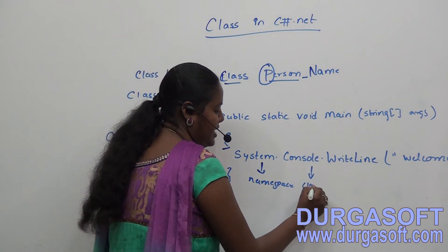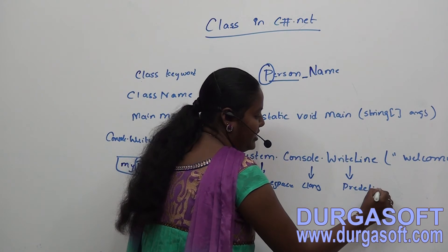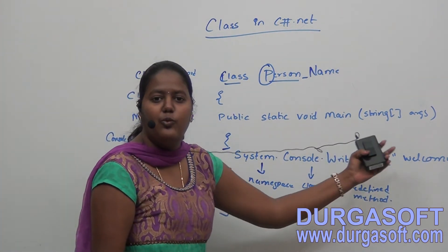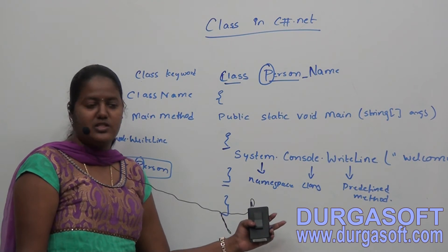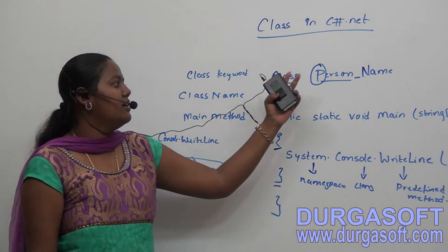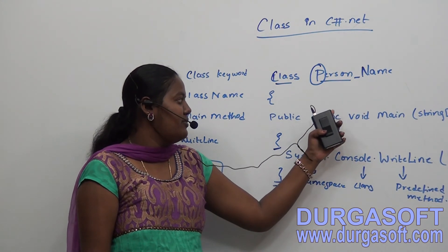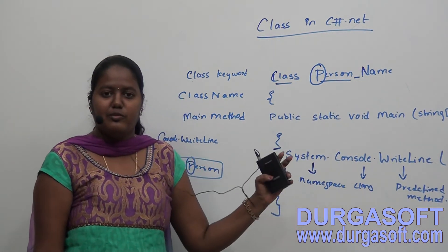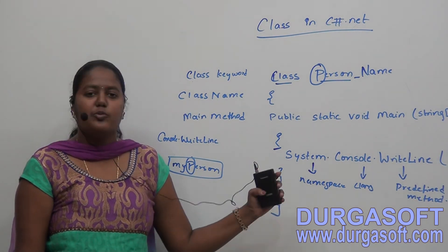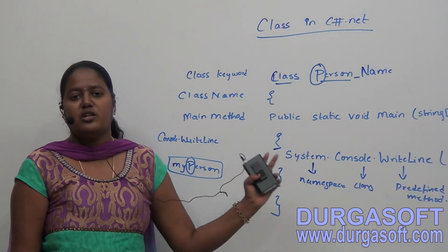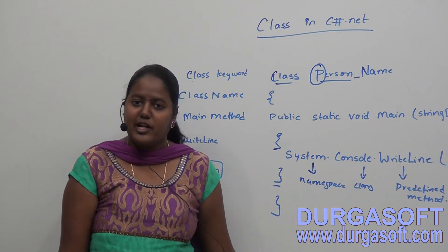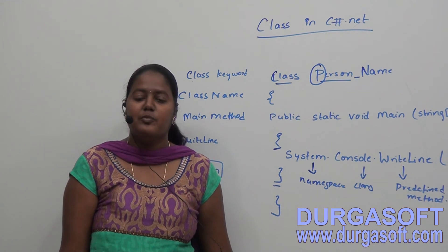System is the namespace, Console is the class name, and WriteLine is the predefined method. The WriteLine method prints the welcome statement on the screen. Apart from System.Console.WriteLine we have many predefined methods: Console.Write, Console.WriteLine, Console.Read, Console.ReadLine, and Console.Clear. The difference between Write and WriteLine: Write displays the message on screen and does not go to a new line, while WriteLine displays the message and moves the cursor to the next line.